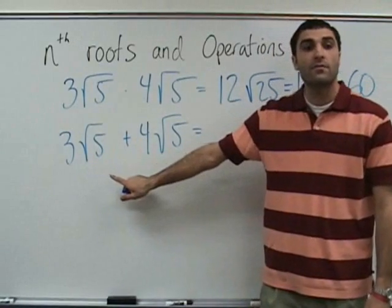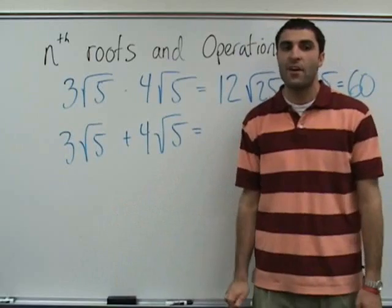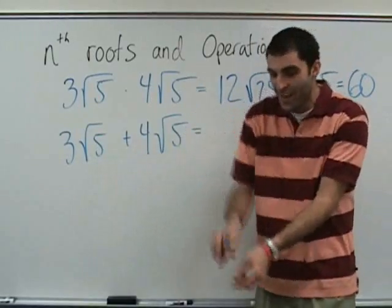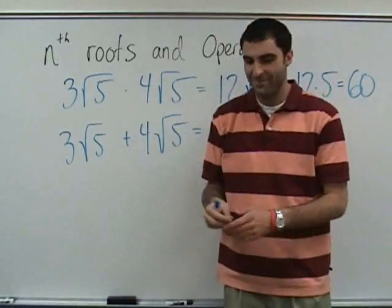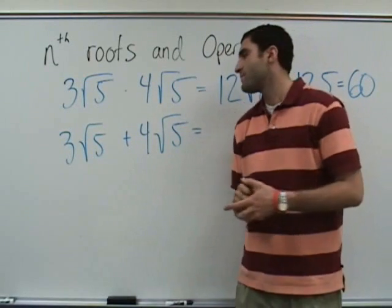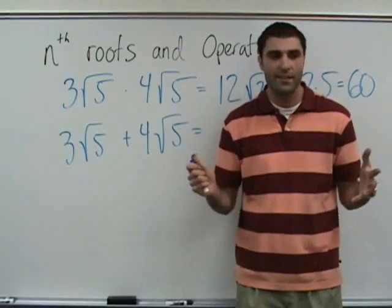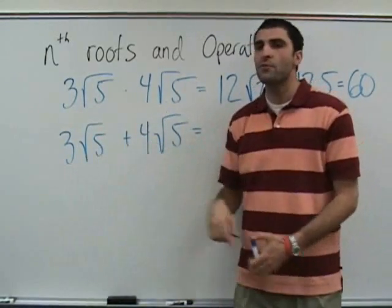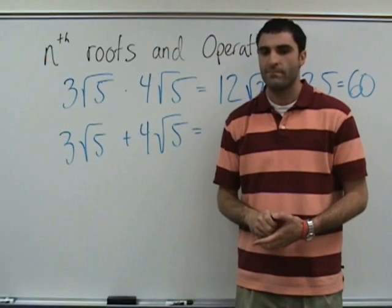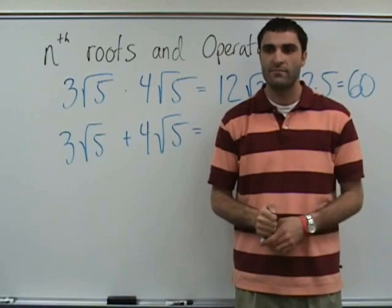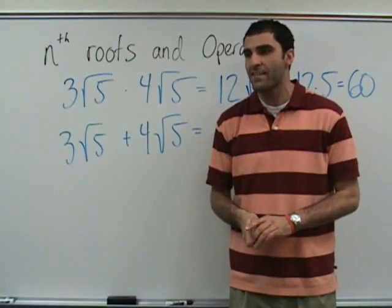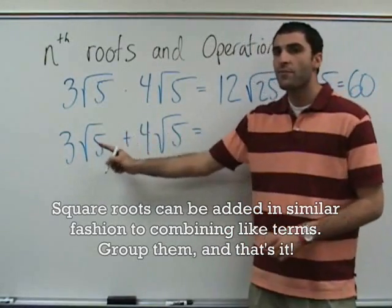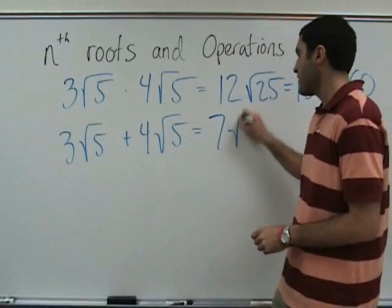What is root strawberry times root strawberry? Strawberry with no roots. Would it be 7 and then square root 5? He is suggesting 7 root 5. Can we do that? You could do that — or you should do that. This is combining like terms. Square root of 5 and square root of 5 are like terms, so this is 7 square root of 5.